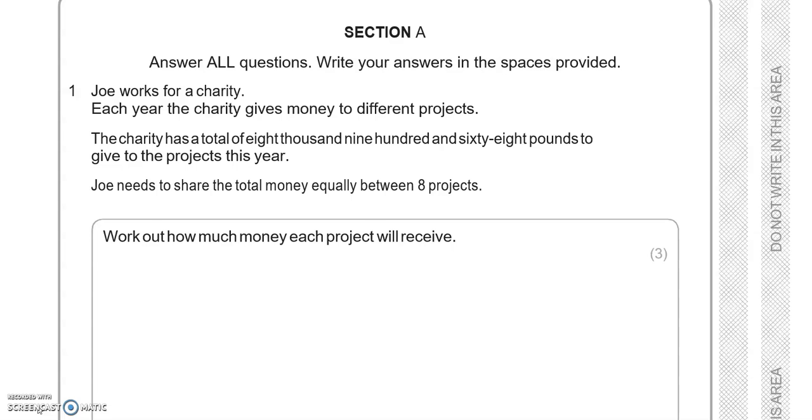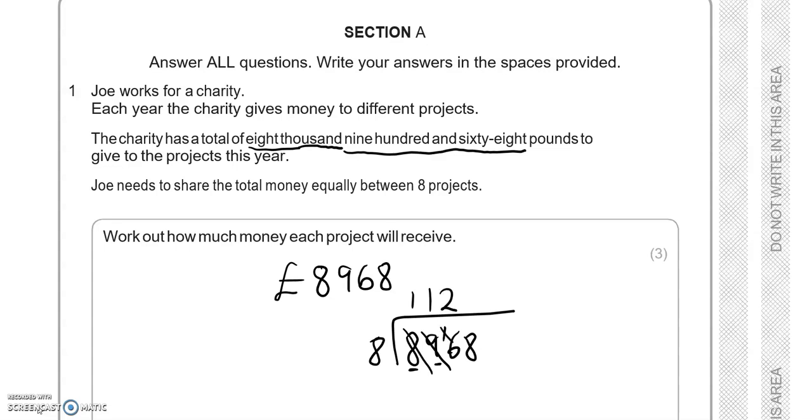First of all, let's write this in digits: £8,968. That will need to be shared between 8 projects, so divided by 8. How many 8s fit into 8? That's exactly 1. How many 8s fit into 9? That is 1 and there is 1 remaining. So 8 into 16 is 2 of them. 8 into 8, there is 1. So £1,121 will go to each charity.